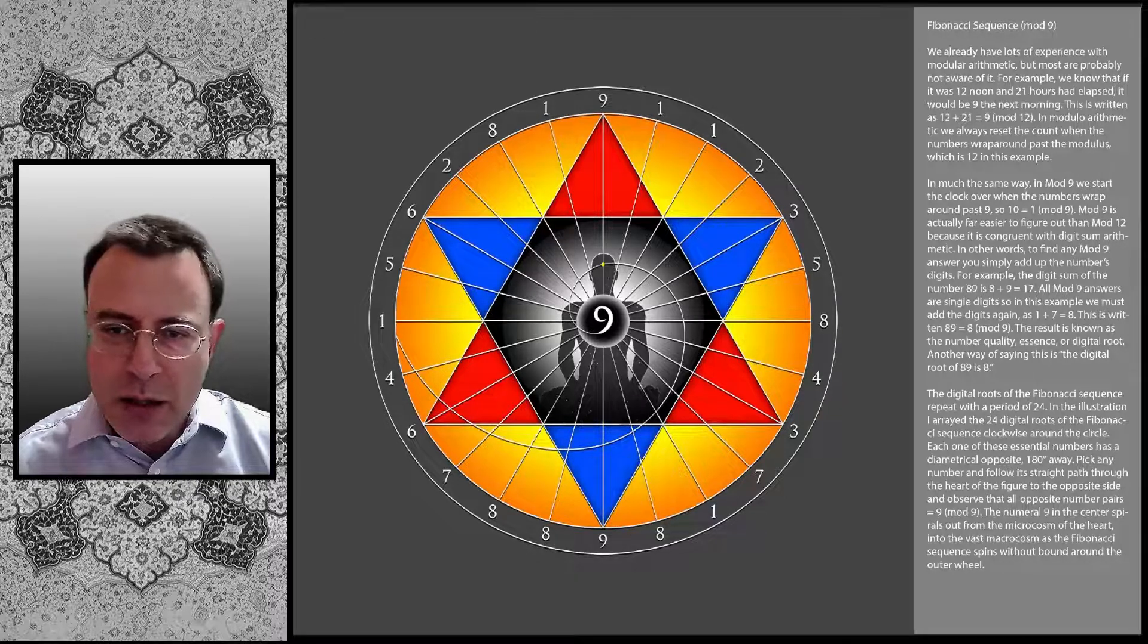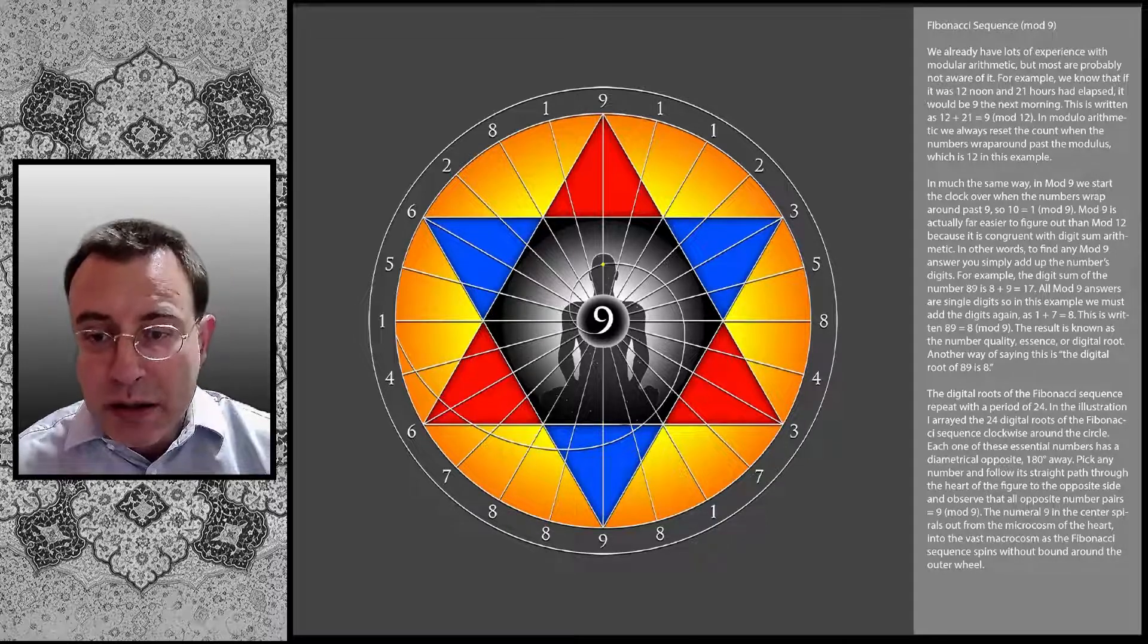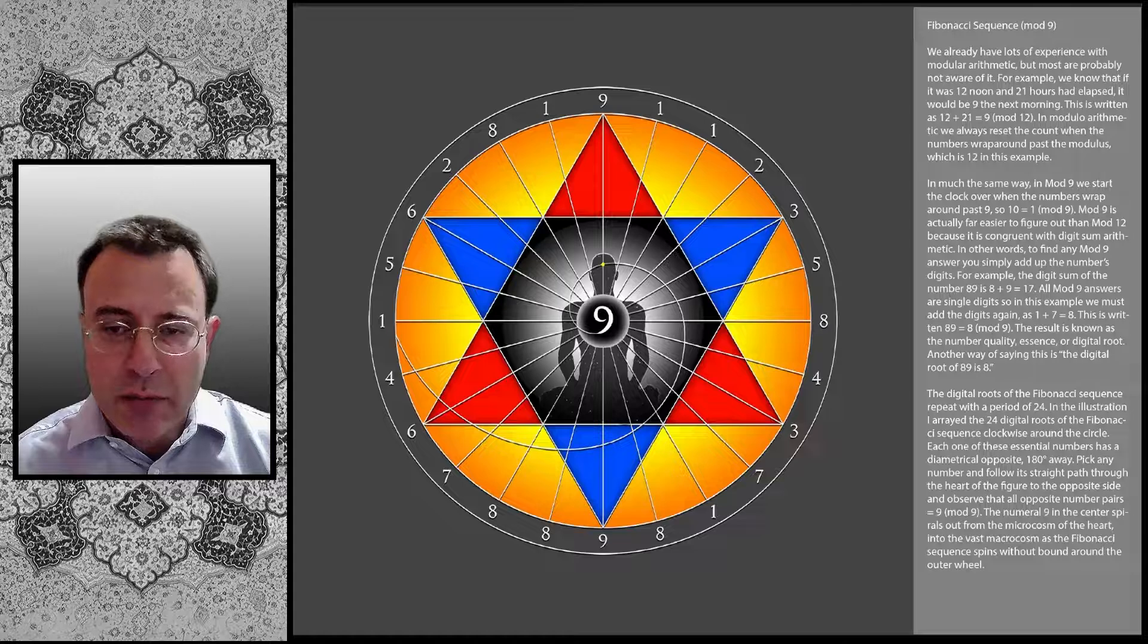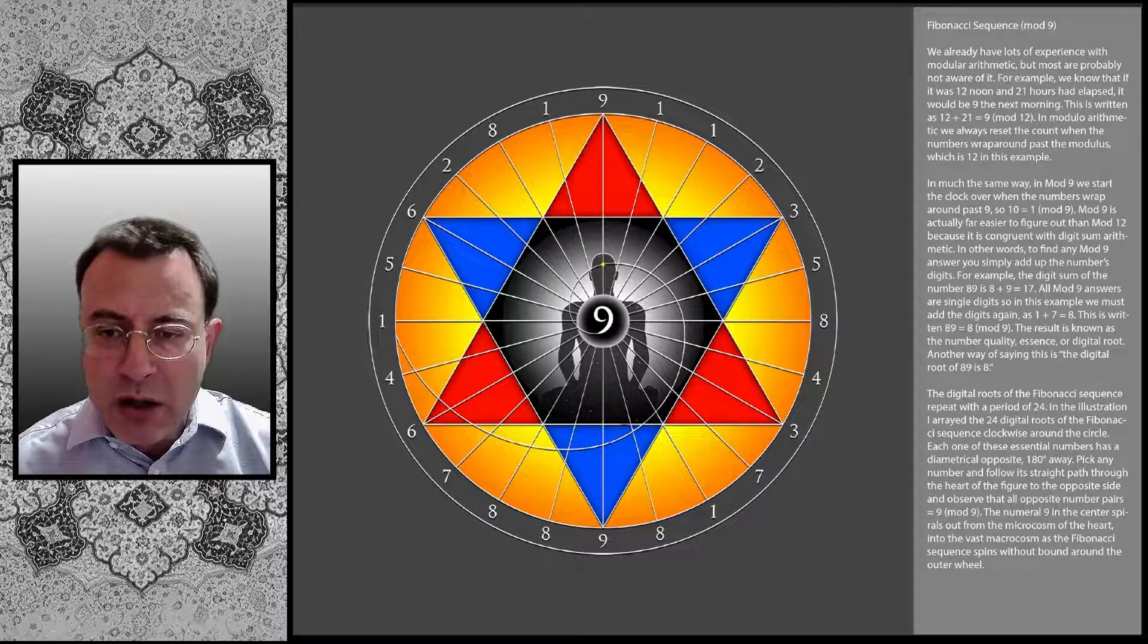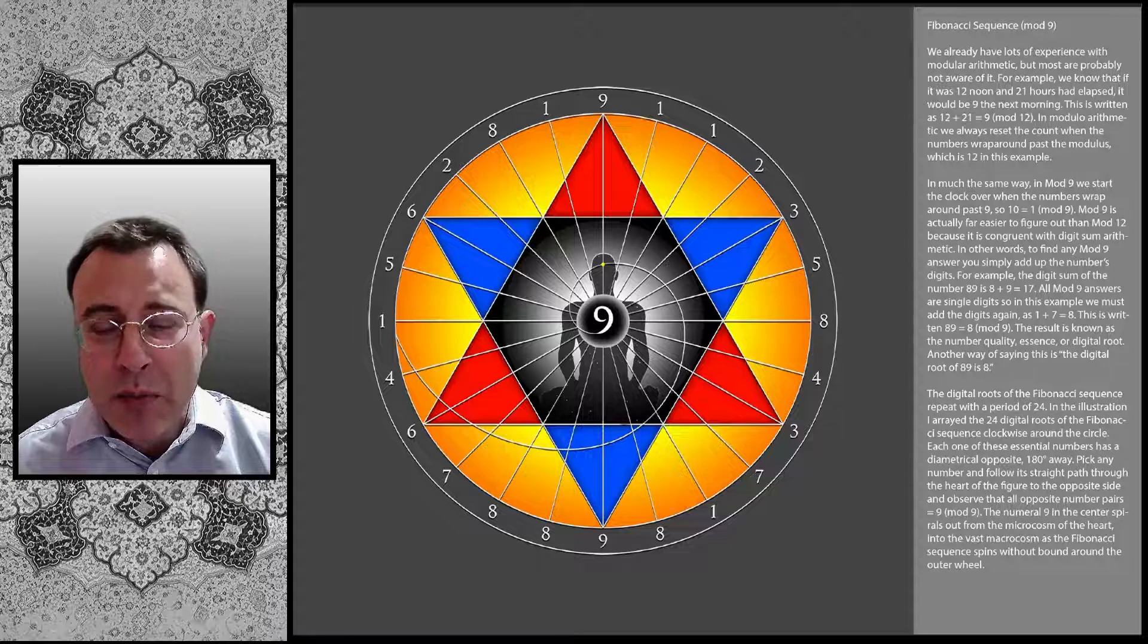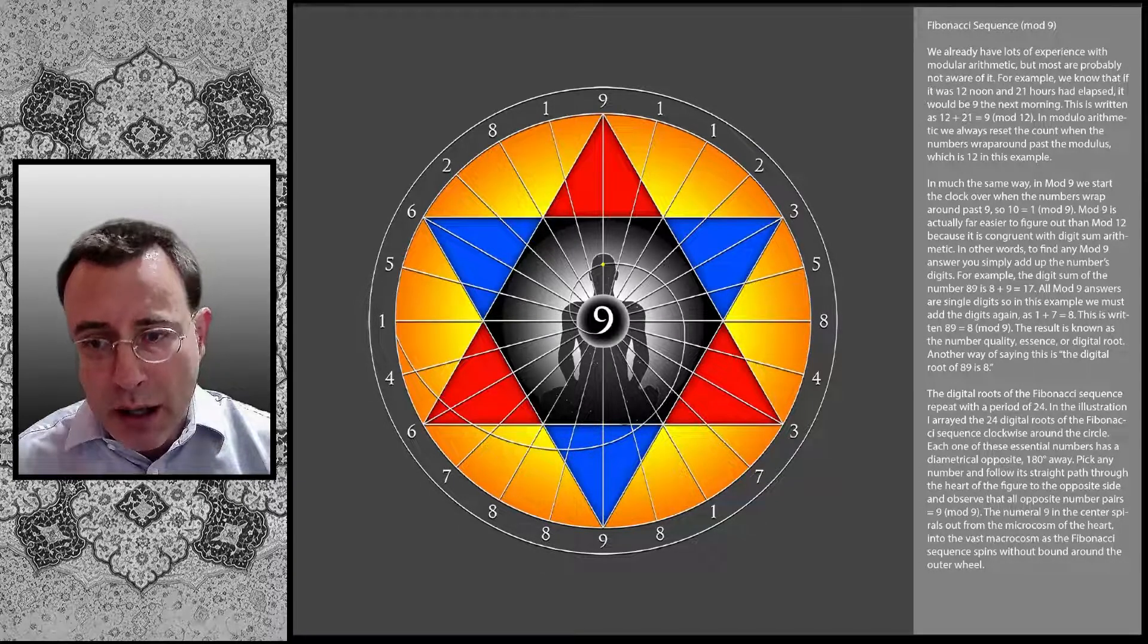In modulo arithmetic, we always reset the count when the numbers wrap around past the modulus, which is 12 in this example. In much the same way in mod 9, we start the clock over when the numbers wrap around past 9. So 10 equals 1 mod 9.